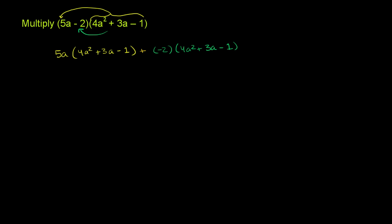Now we distribute the 5a onto each term. 5a times 4a squared: 5 times 4 is 20, and a times a squared is a to the third power. Then 5a times 3a: 5 times 3 is 15, and a times a is a squared. Finally, 5a times negative 1 is just negative 5a.